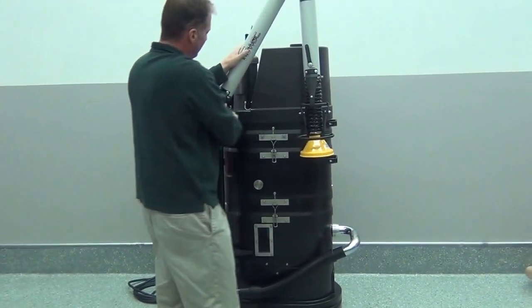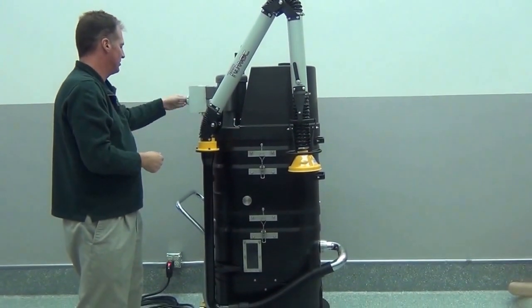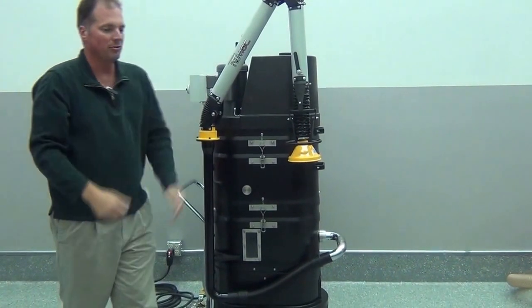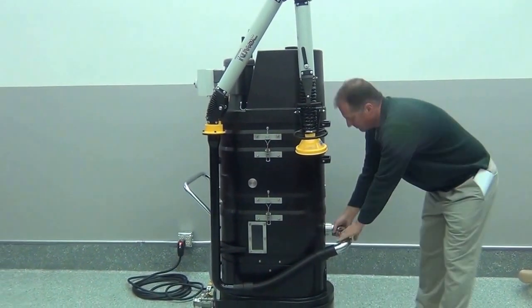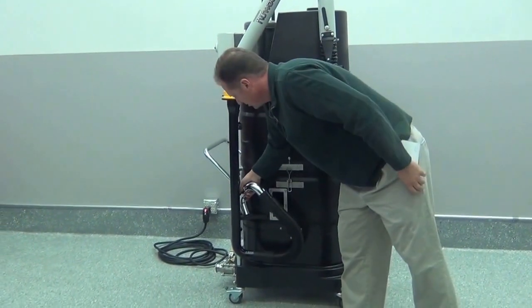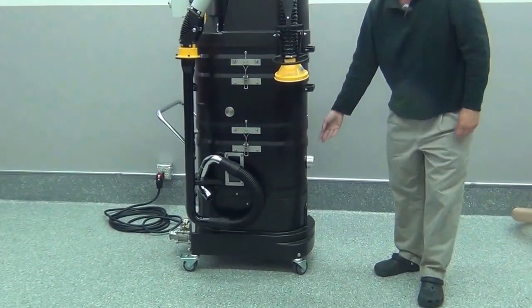All of these are adjustable so you can adjust them for the tightness that you want for the application that you're doing. When you're done doing your fume collection, it's as simple as removing the intake hose, putting that in place, and now you can hook up your accessory nozzle.